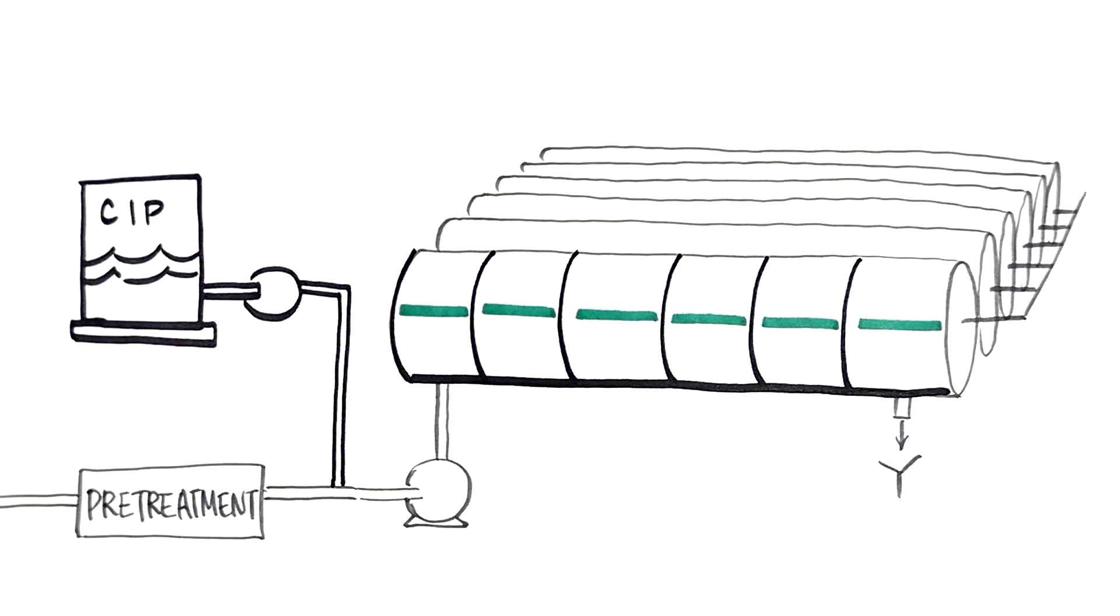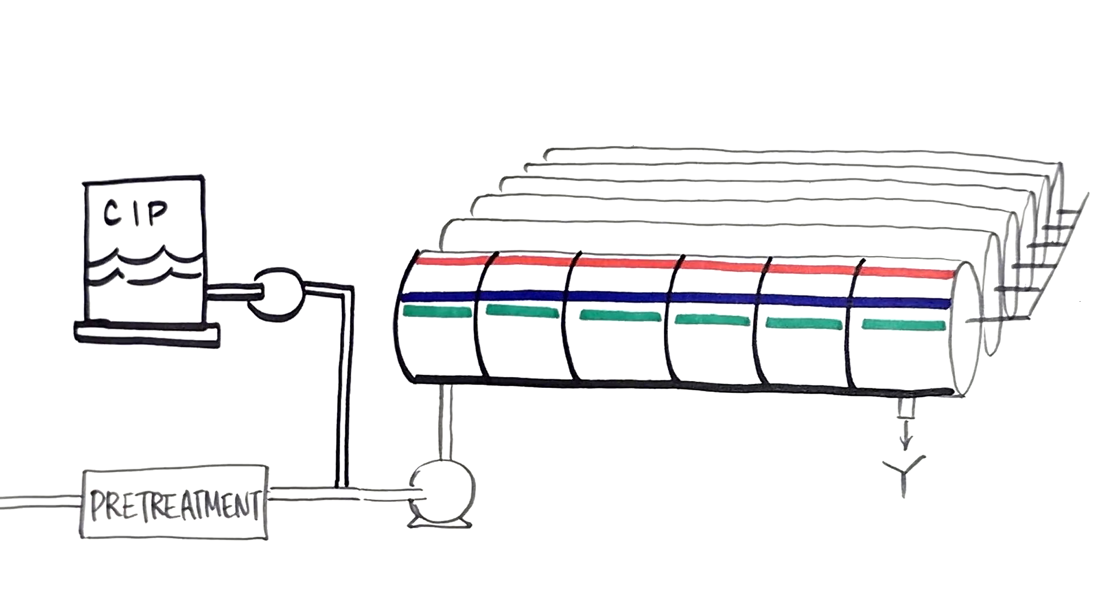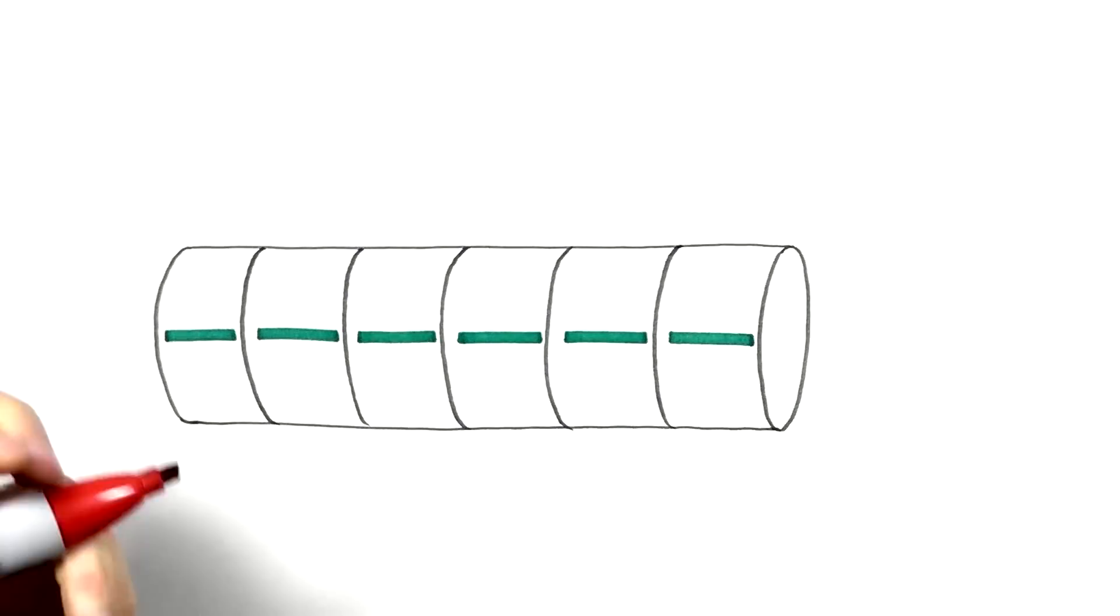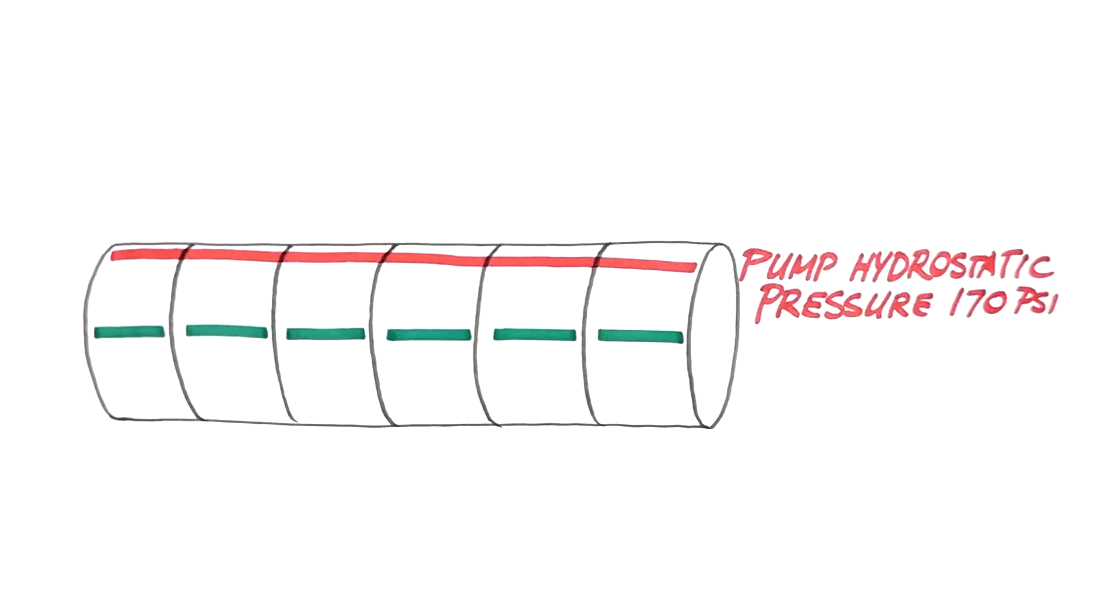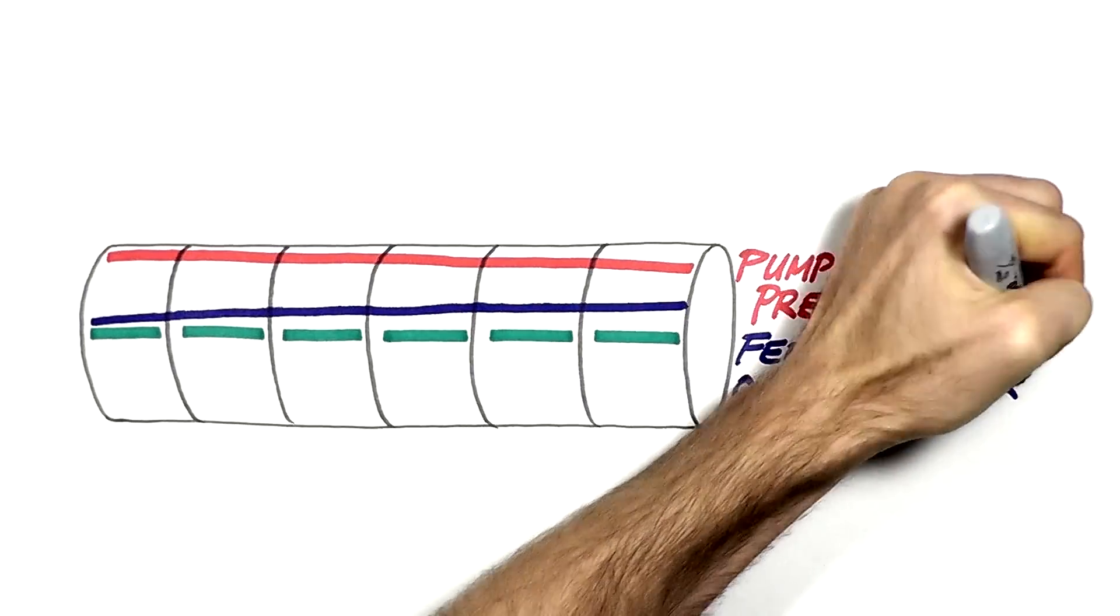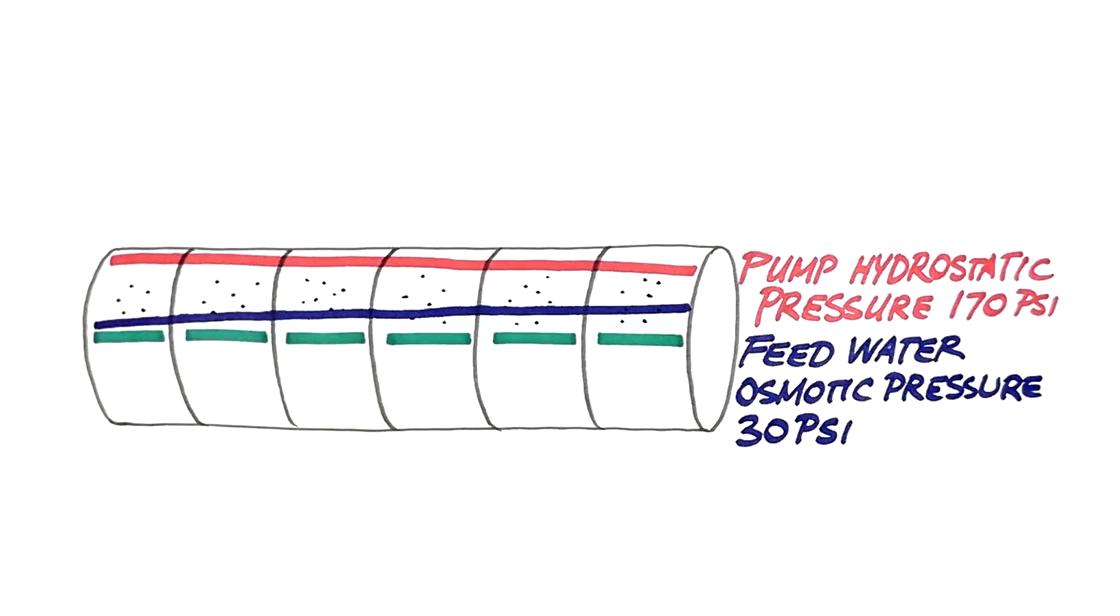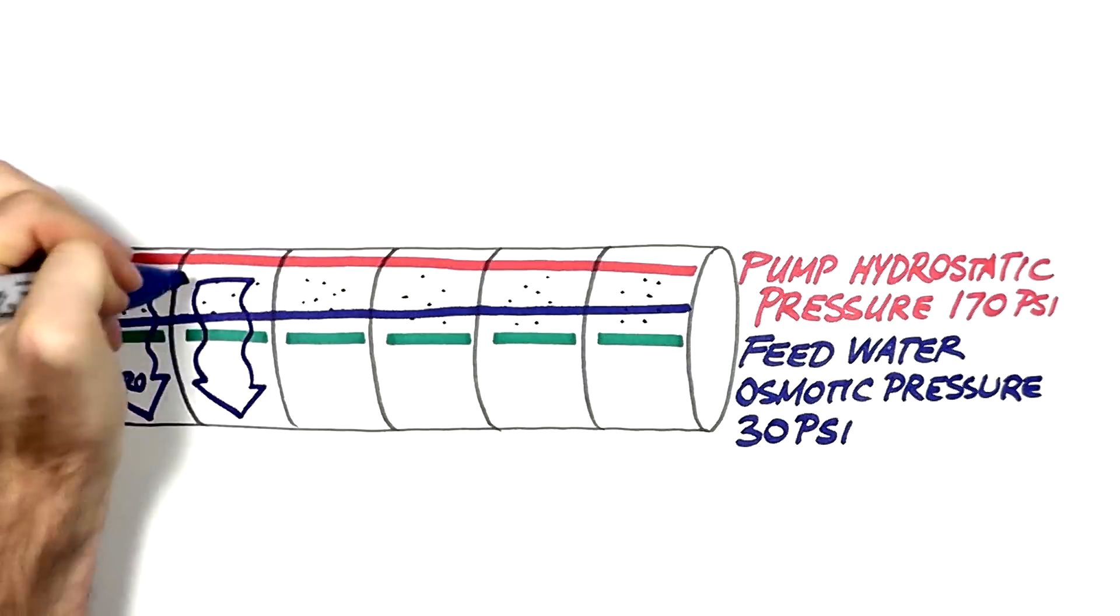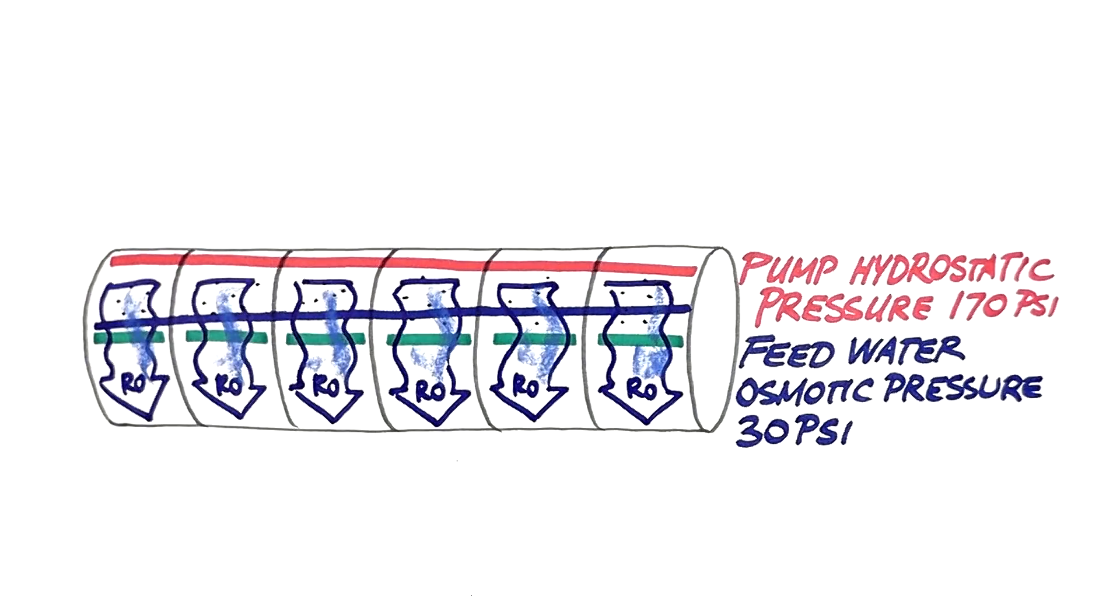On the membranes, we have applied hydrostatic and osmotic pressures. Let's look at one pressure vessel more closely. The red line is 170 psi pump hydrostatic pressure. The blue line is 30 psi feed water osmotic pressure. Because the pump hydrostatic pressure is higher than the osmotic pressure, the permeate is forced out through the membrane, and the process is called reverse osmosis.